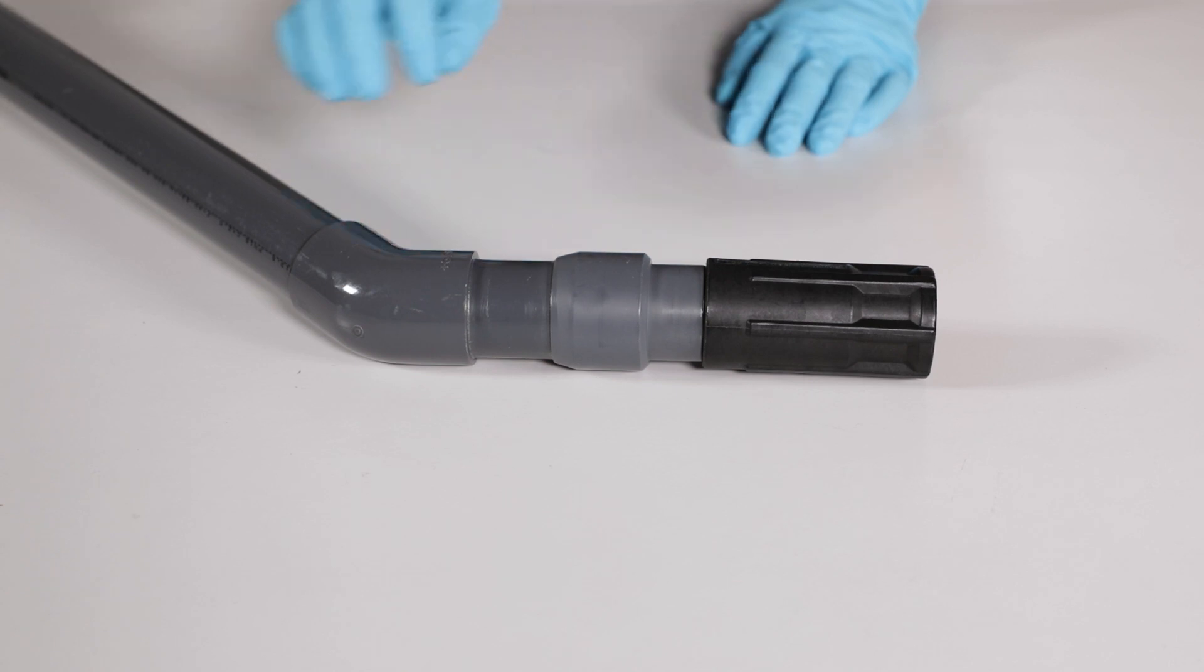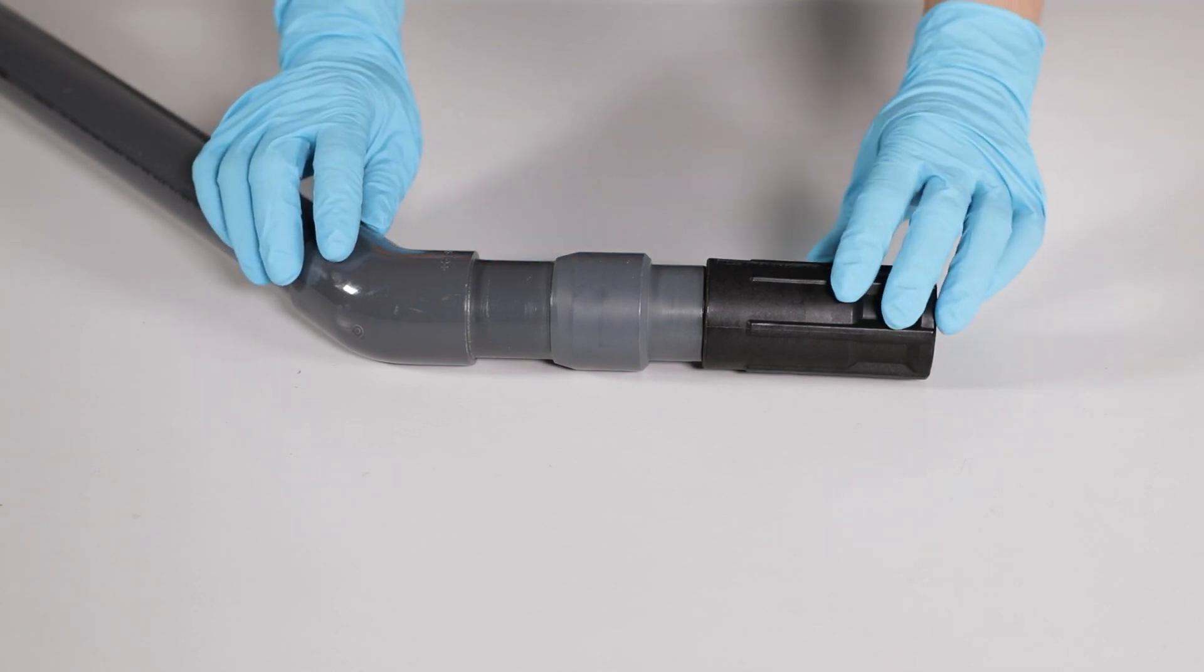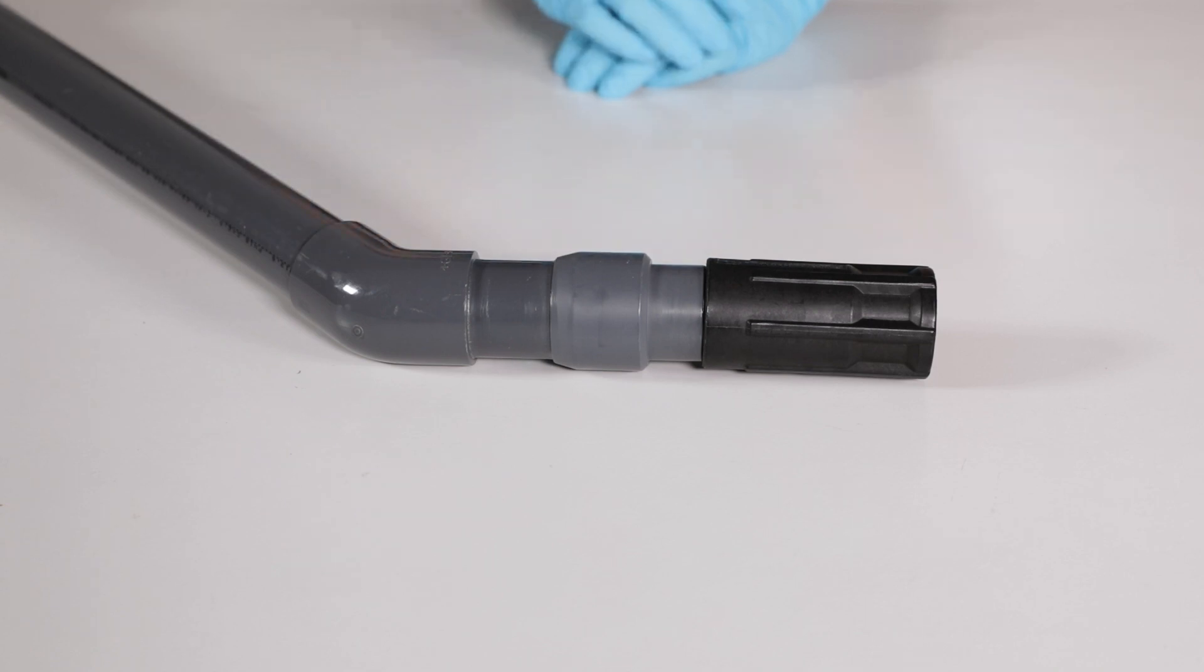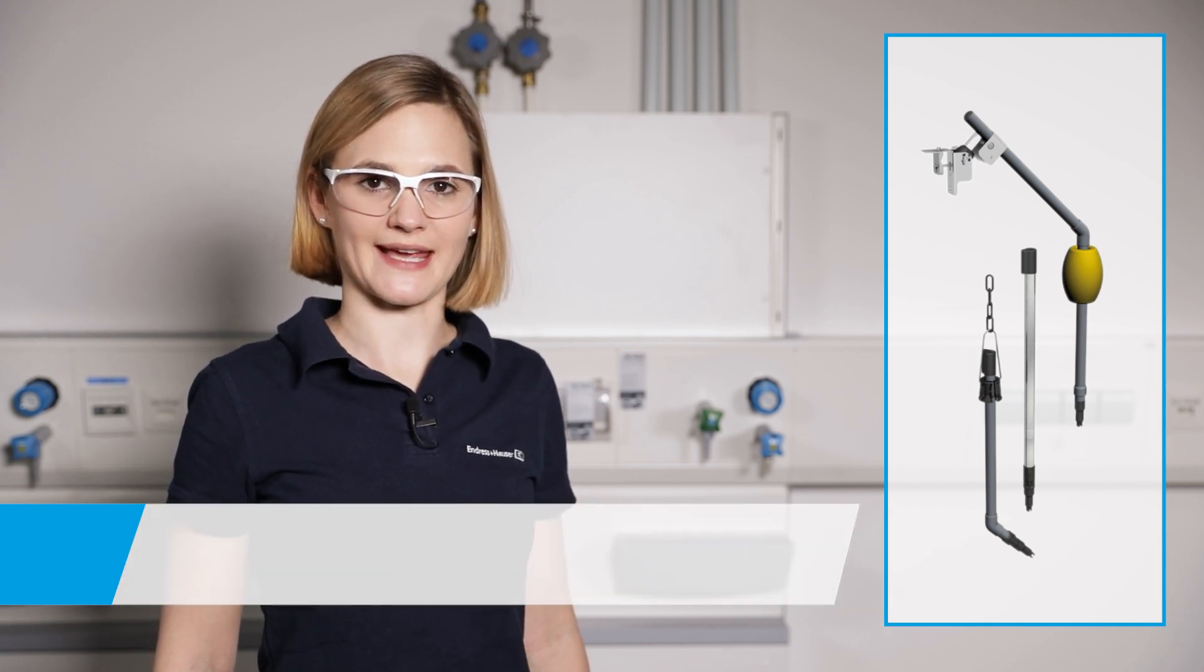For installing the sensor into the CYA112 using the quick fastener is recommended. Installed in this assembly the flow velocity against the membrane must be at least 15 centimeters per second.